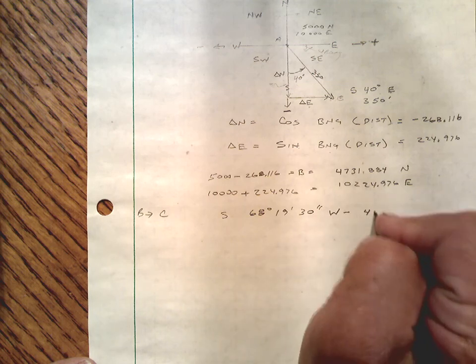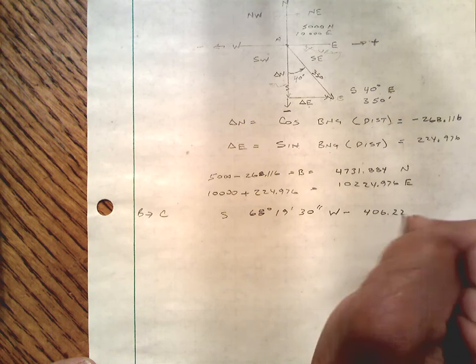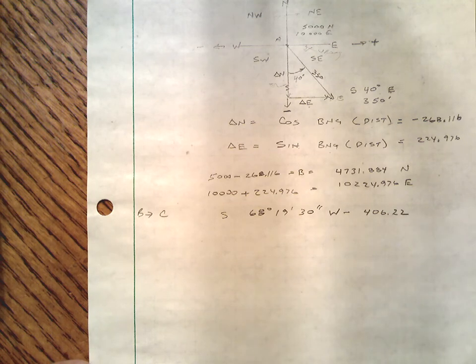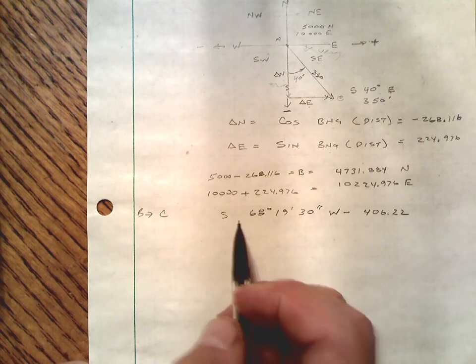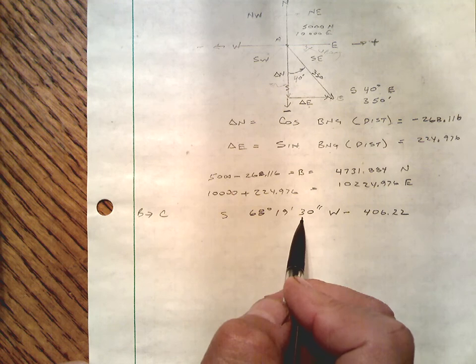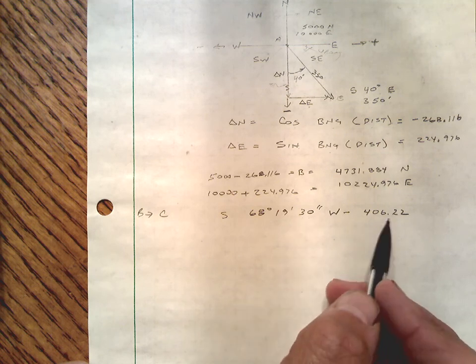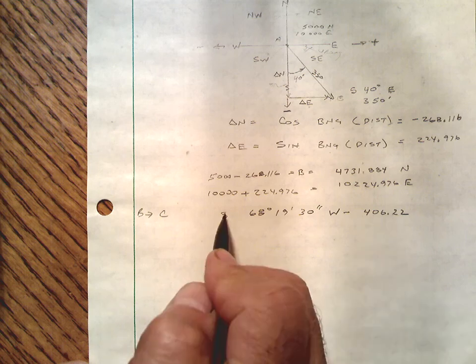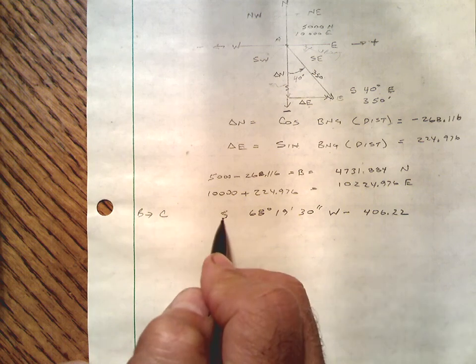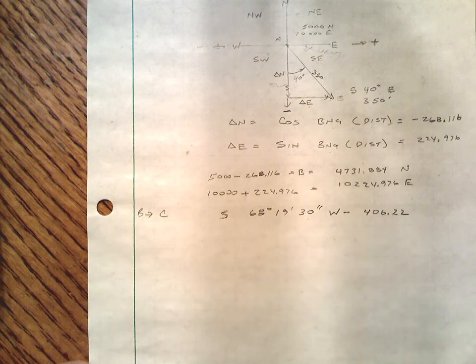And let's go 406.22. Typically in bearings on property, they are going to be measured out to the nearest seconds. And they're going to be measured in distance to the nearest hundredth of a foot. Particularly in modern measurements or current measurement systems, seconds and hundredths of a foot is about the right precision level.